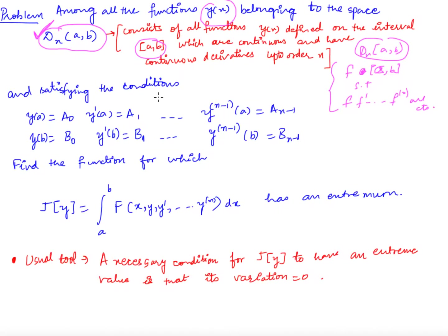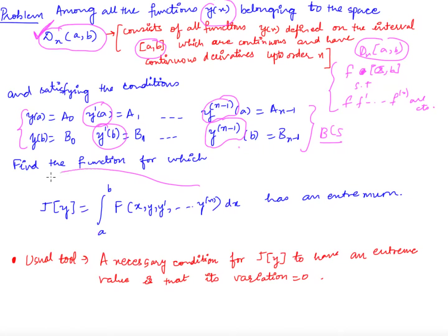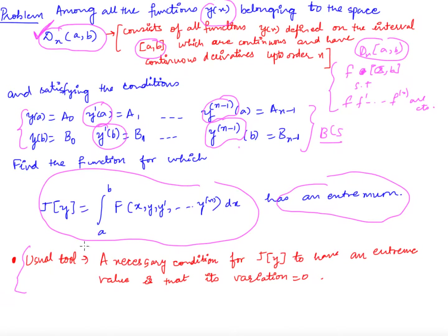Among all such functions which satisfy the boundary conditions — we know y(a), y(b), y'(a), y'(b), and up to the (n−1)th derivative of y at both a and b — we would like to find a function such that this functional has an extremum. So we will apply our usual tool: find the variation of this functional, set it equal to zero, and that gives us the necessary condition for the extremum.